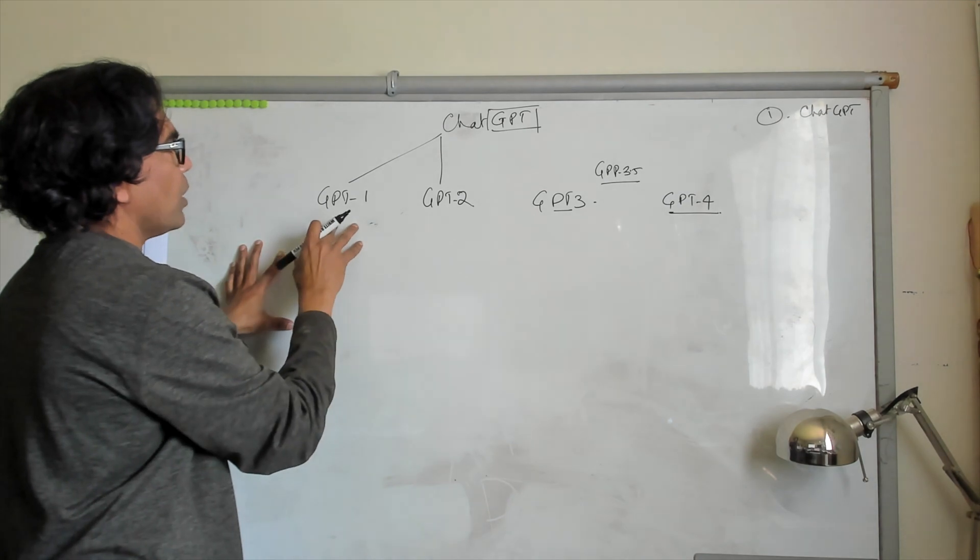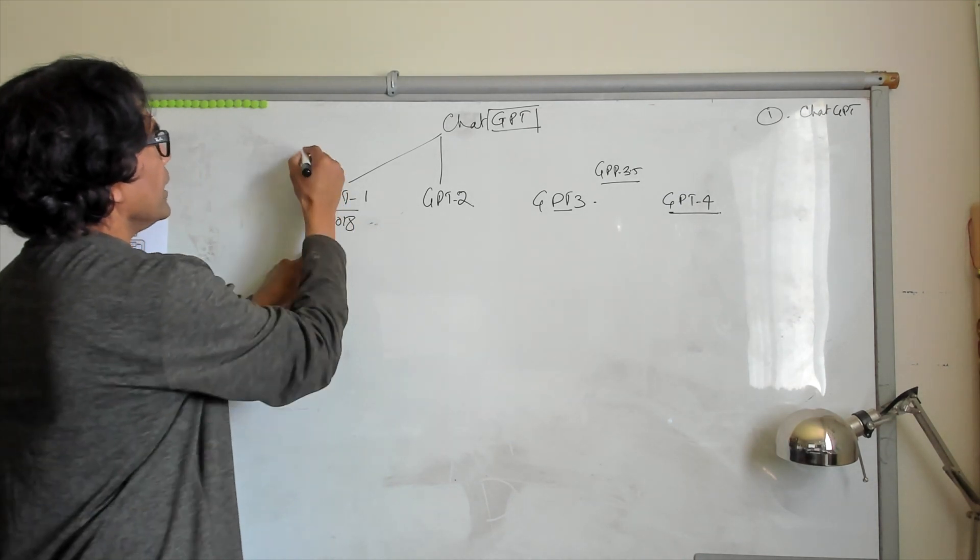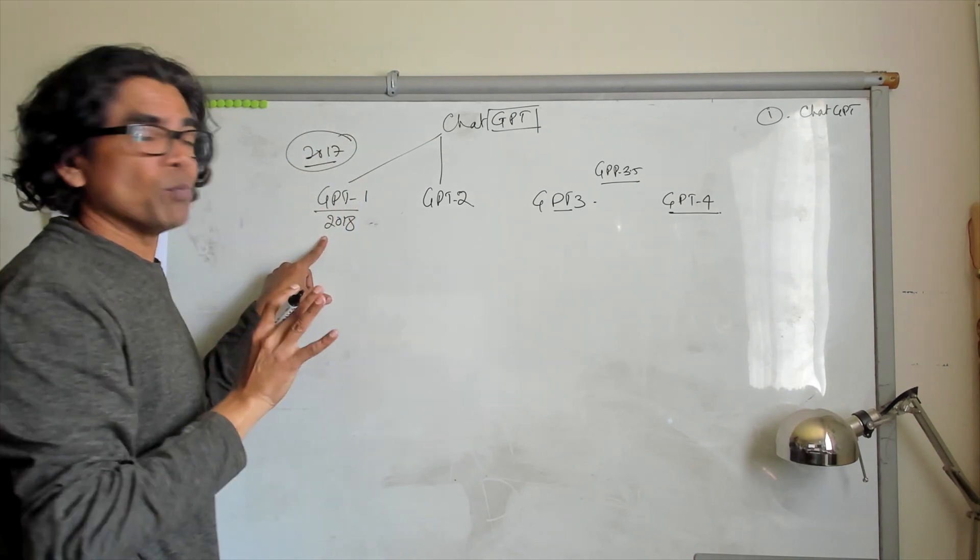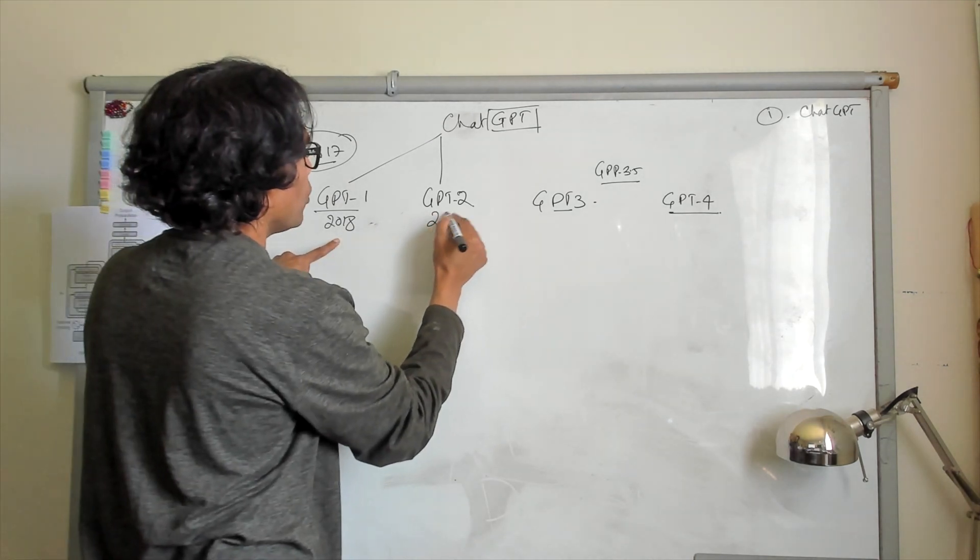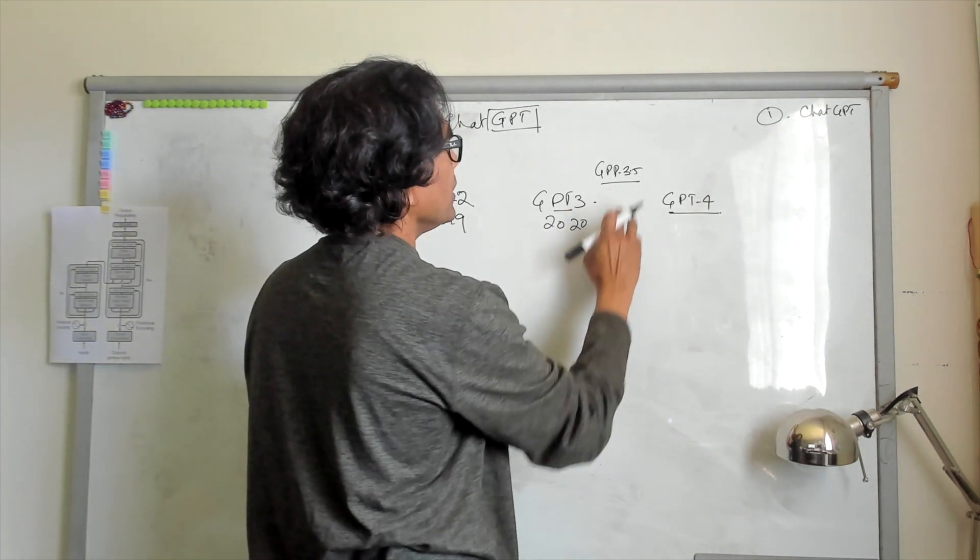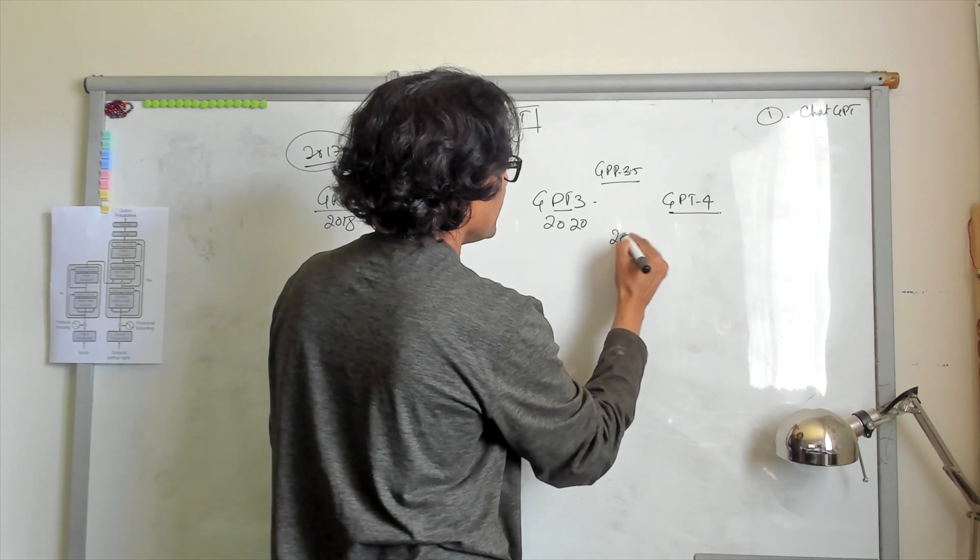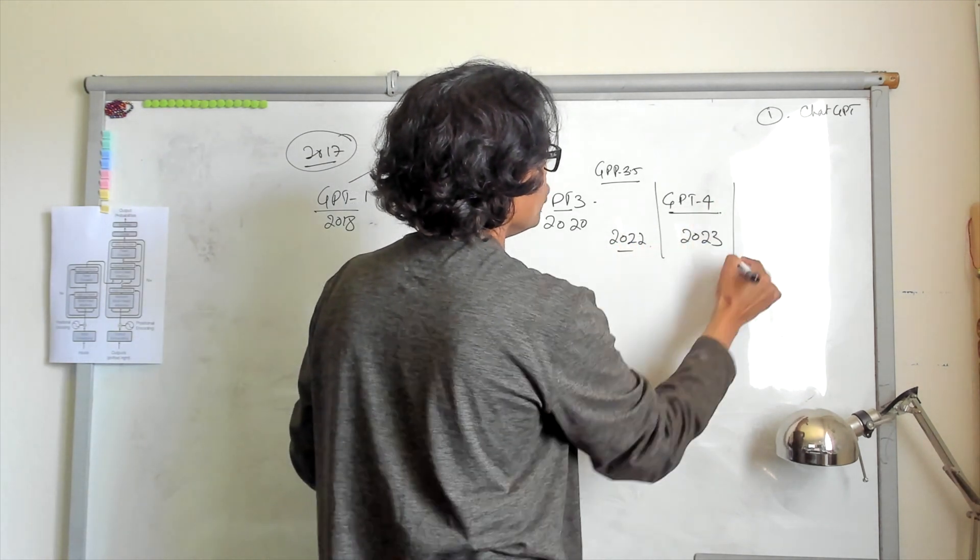So this is the model which came around 2018, because in 2017 the Transformer architecture was released by Google. So GPT-1 came in 2018, 2019, 2020 timeframe. And then we have seen that ChatGPT was somewhere here in 2022, and now in 2023 we have seen GPT-4.